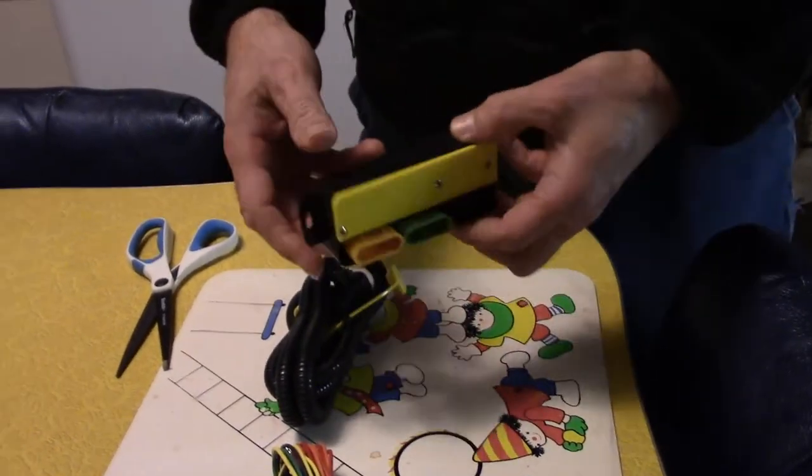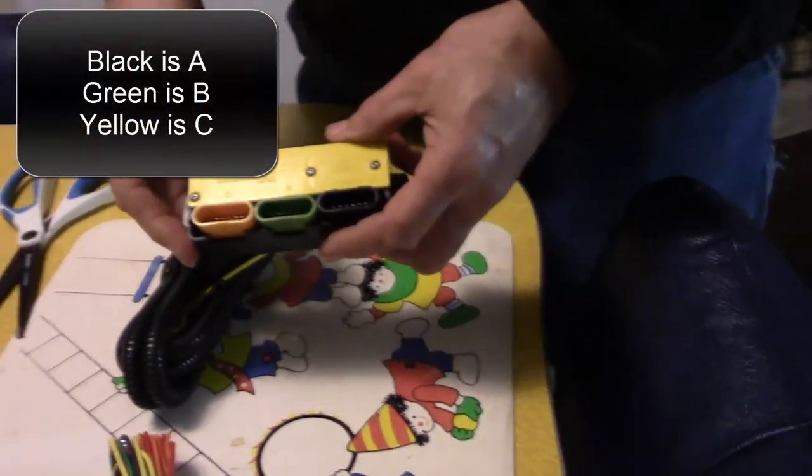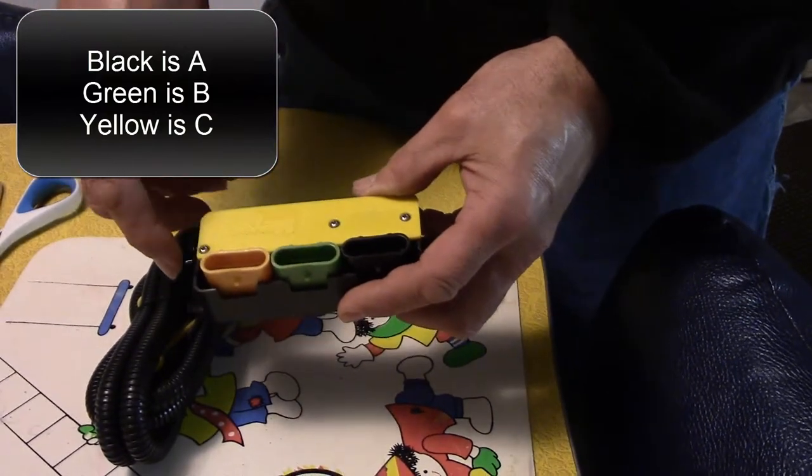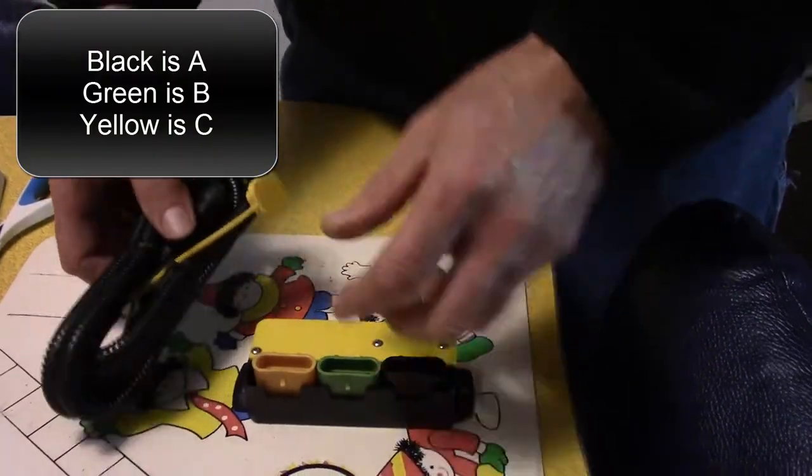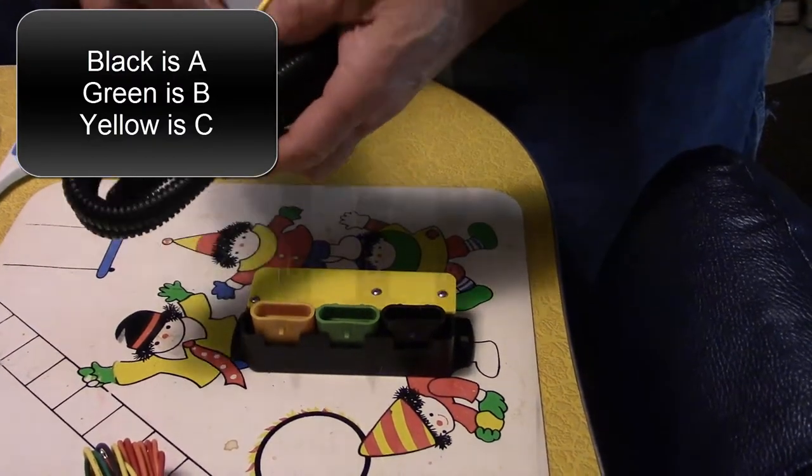So this is the actual module. Remember in the other video, one of the items inside there was broke. And then here's the cords that come along with it.